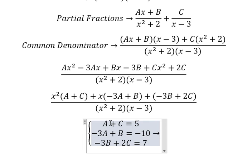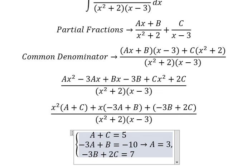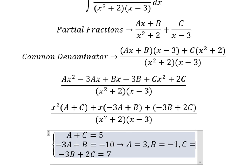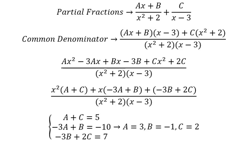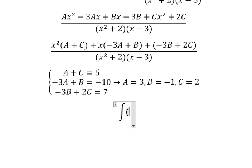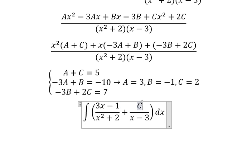We find the solutions of the system: A equals 3, B equals negative 1, and C equals 2. Now we substitute these values back — A equals 3, B equals negative 1, C equals 2.